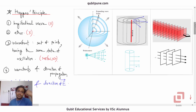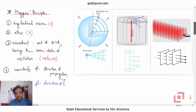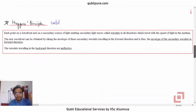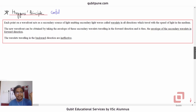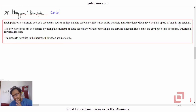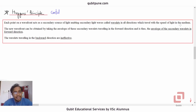We need only consider the wavelets in the forward direction. Each point on a wavefront acts as a secondary source emitting secondary waves called wavelets in all directions, which travel with the speed of light in that medium — the same speed as the speed of light in that medium.